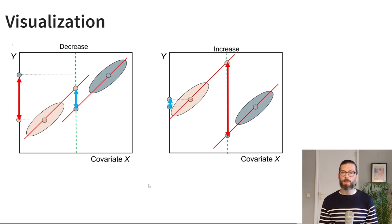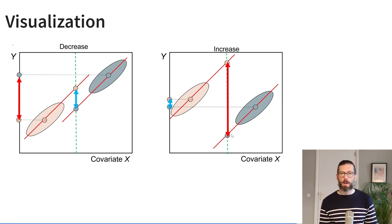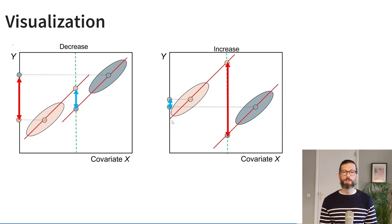The mean difference can also increase after adjustment. In the right-side diagram, the orange group scores much lower on the covariate than the gray group, but both groups score approximately equal on the dependent variable Y — so there's a very small unadjusted mean difference. If we adjust for the covariate by extrapolating along the regression line to the same covariate value (indicated by the green dotted line), the adjusted means diverge considerably. After adjusting, the effect can go either way — it can be much bigger or much smaller than the unadjusted effect.